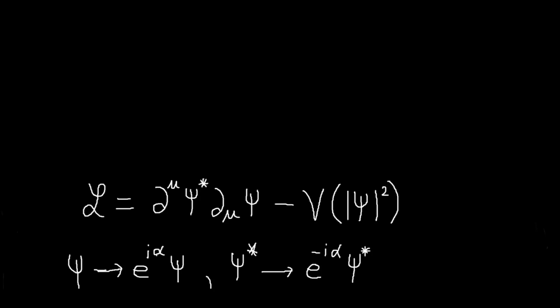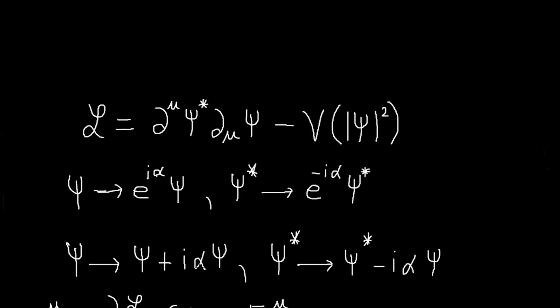And if we consider, if we say alpha is an infinitesimal parameter, we can do a Taylor expansion of this thing. And our transformations will then look like this. So e to the i alpha is one plus i alpha in the infinitesimal limit. So we get this.